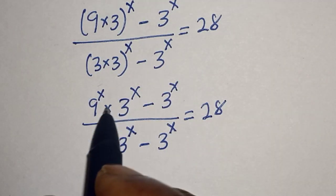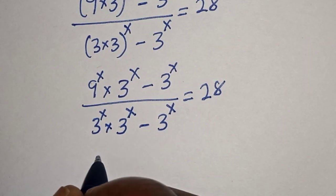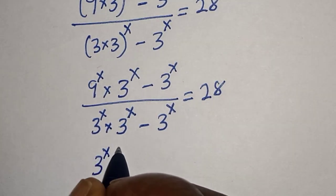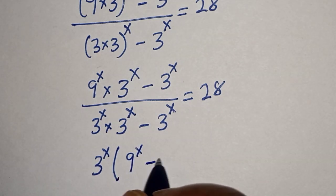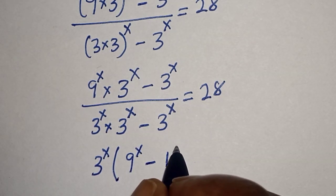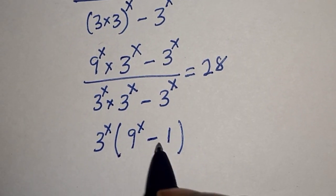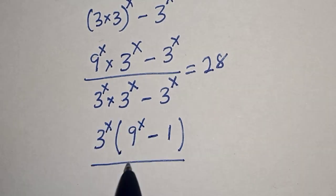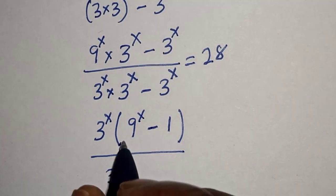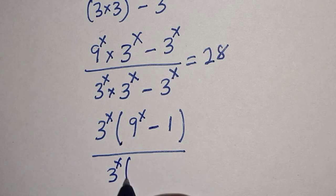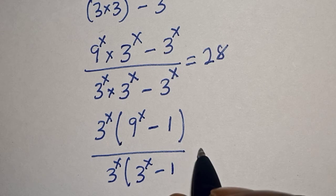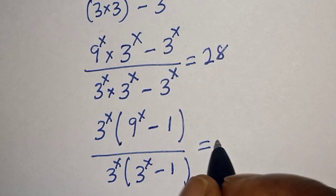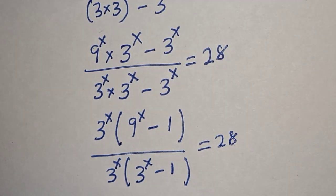Let's bring 3 raised to power s out. We have 3 raised to power s, bracket 9 raised to power s minus 1, over 3 raised to power s, bracket 3 raised to power s minus 1, is equal to 28.